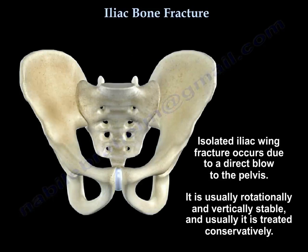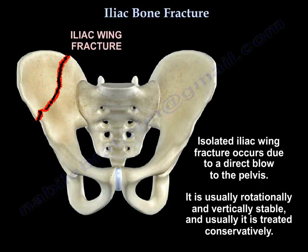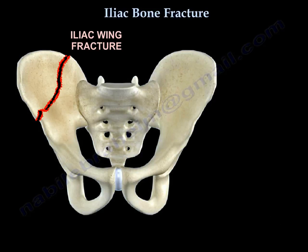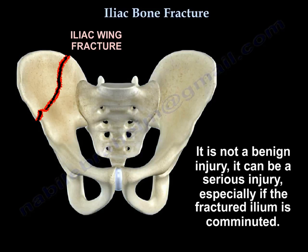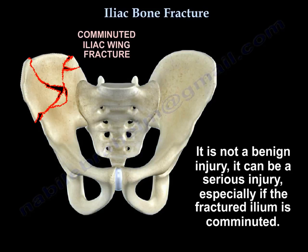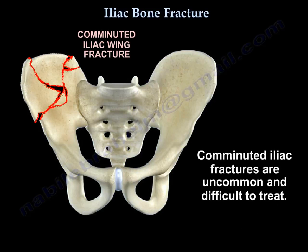The isolated iliac wing fracture occurs due to a direct blow to the pelvis. It is usually rotationally and vertically stable, and usually treated conservatively. However, it is not a benign injury — it can be a serious injury, especially if the fracture ilium is comminuted. Comminuted iliac fractures are uncommon and difficult to treat.